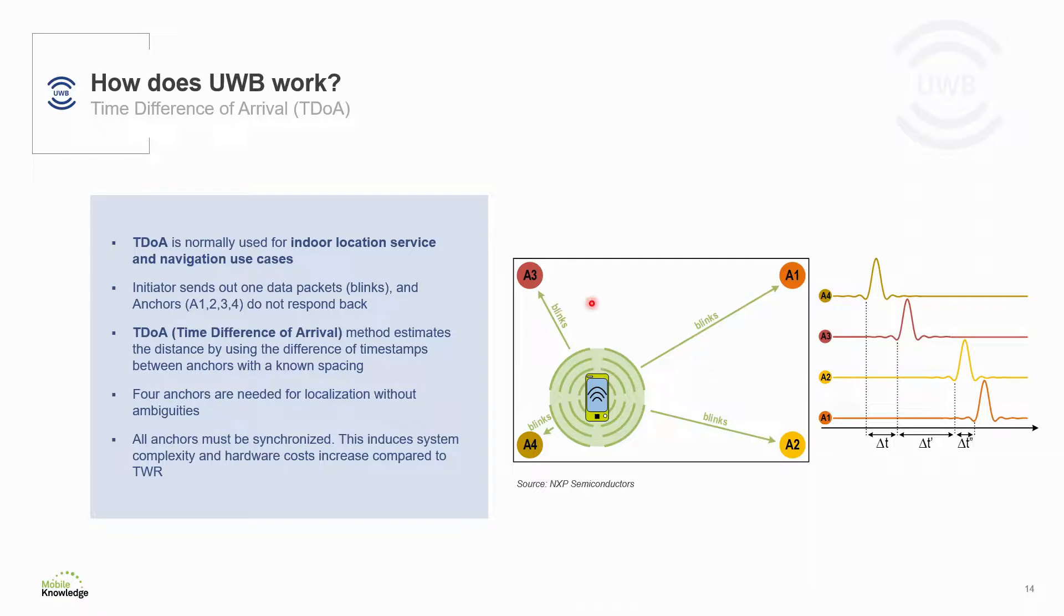The responders, in this case these four anchors placed at fixed locations, receive these blink packages, and based on the reception timestamp of each one and the location of the anchors, the time difference of arrival can be used by a location engine to compute the position of the object. For this system to work well, all anchors must be synchronized, which induces system complexity and hardware costs increase compared to two-way ranging.